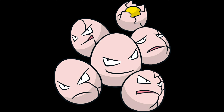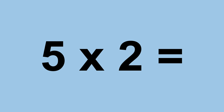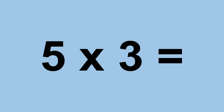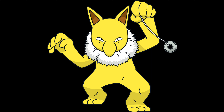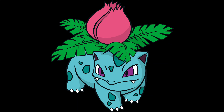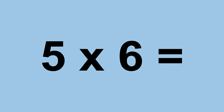Five times zero equals zero. Five times one equals five. Five times two equals ten. Five times three equals fifteen. Five times four equals twenty. Five times five equals twenty-five. Five times six equals thirty.